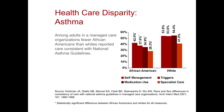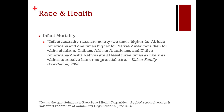Among adults in a managed care organization, fewer African Americans than whites reported care consistent with the national asthma guidelines — both for self-management, medication use, triggers, and access to specialist care. Infant mortality rates are nearly two times higher for African Americans and one time higher for Native Americans than for white children. Latinos, African Americans, and Native American or Alaska Natives are at least three times as likely as whites to receive late or no prenatal care.